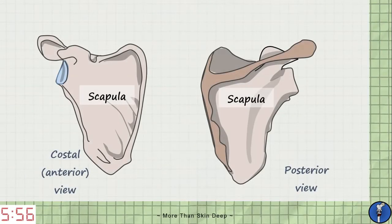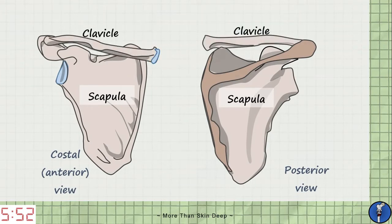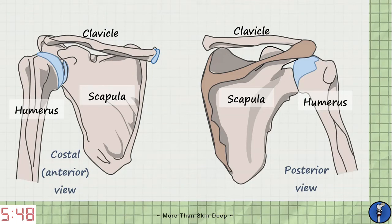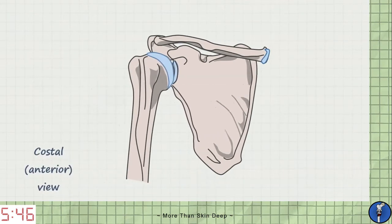The three bones that form the shoulder joint are the triangular scapula or shoulder blade, the clavicle or collarbone, and the humerus which is the bone in your upper arm.